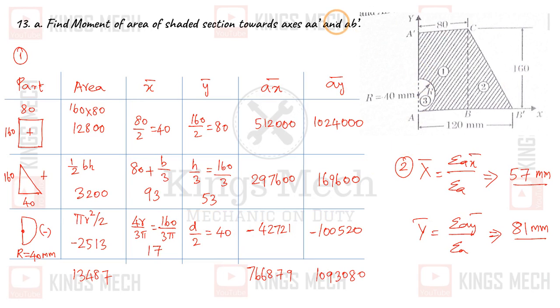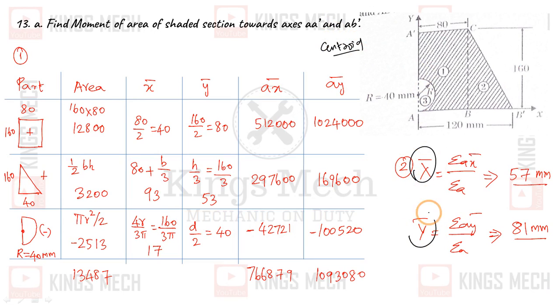The first thing we need to find is the value of the centroid. The centroid is x̄ and ȳ, that is summation of A·x̄ divided by summation of A, and summation of A·ȳ divided by summation of A.